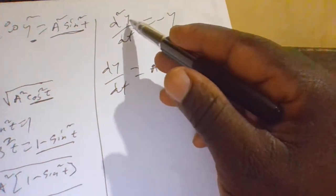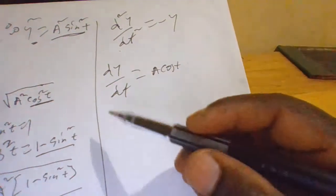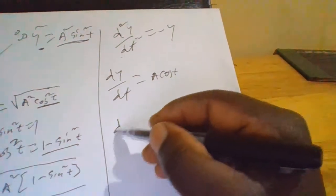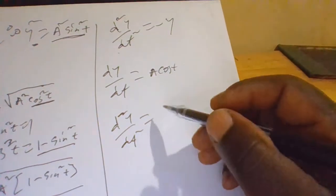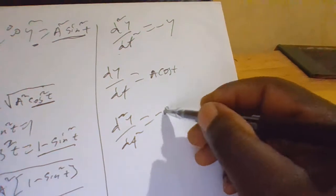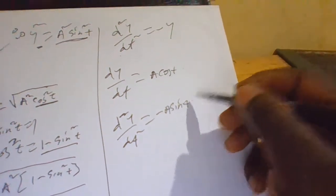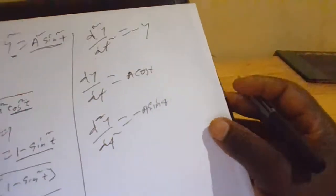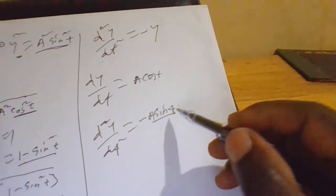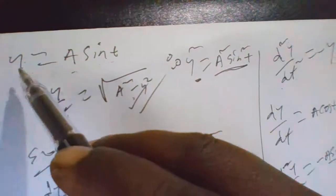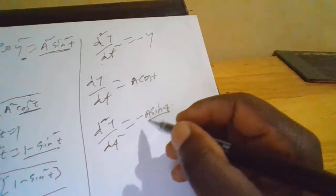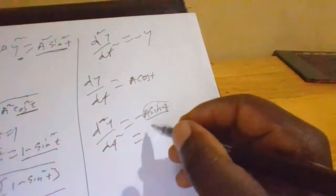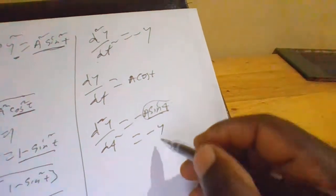Now d²y/dt² — differentiate dy/dt for the second time. The derivative of cos t gives negative A sin t. But y equals A sin t, therefore we replace A sin t with y. This equals negative y. We have shown part (ii).